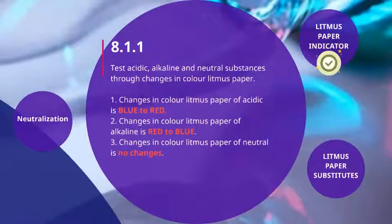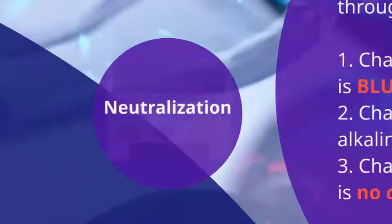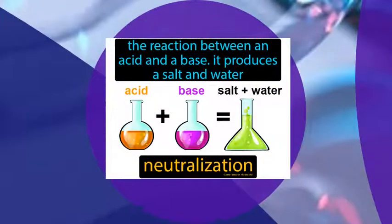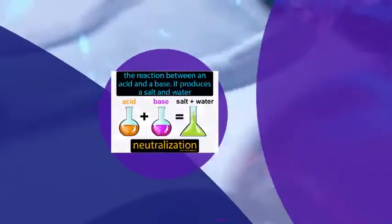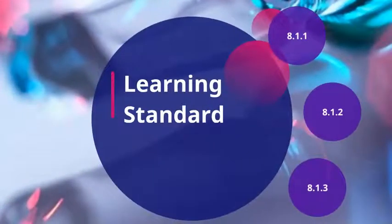This is an extra point for you all — neutralization. What does neutralization mean? The formula for neutralization is: acid plus alkaline forms salt and water. This is what we call the neutralization process. This concludes learning standard 8.1.1.